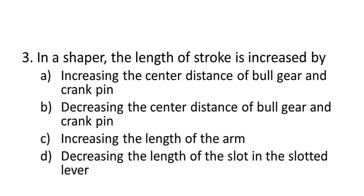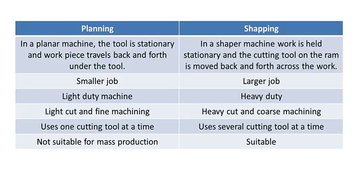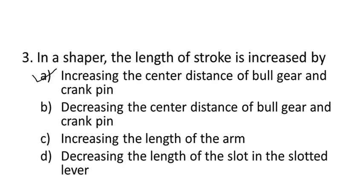Question three asks how to increase the stroke length in a shaper. The options are: decreasing the center distance of bull gear and crank pin; increasing the center distance of bull gear and crank pin; increasing the length of arm; and decreasing the length of slot in the slotted lever mechanism. The correct answer is A — increasing the center distance between bull gear and crank pin — because as the bull gear rotates, if the distance between the crank pin and bull gear center increases, the stroke length increases.